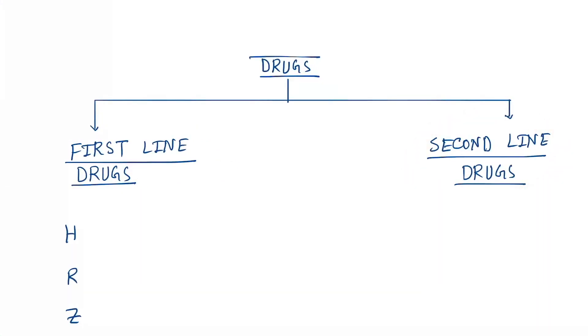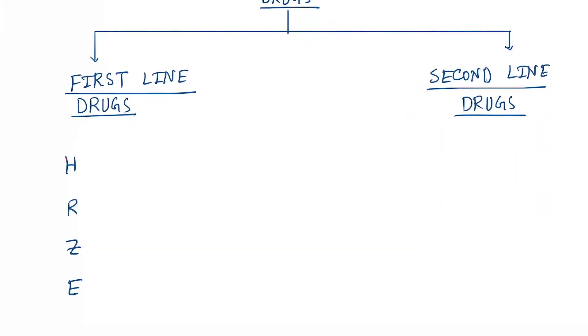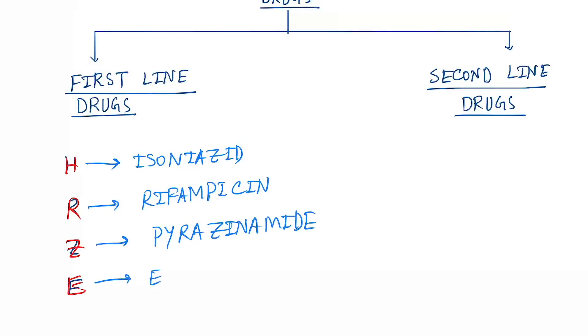In first line drugs, remember HRZE. H for isoniazid, R for rifampicin, Z for pyrazinamide, and E for ethambutol.